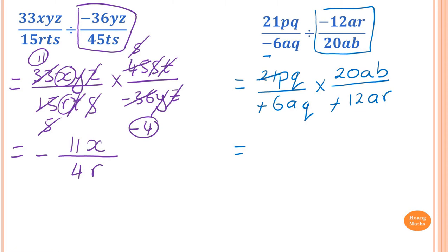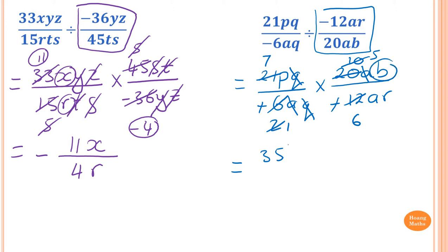Simplify numerals: 21 and 6 divide by 3 giving 7 and 2; then 2 and 20 divide by 2 giving 1 and 10; then 10 and 12 divide by 2 giving 5 and 6. Cancel pronumerals: q cancels with q, a cancels with a. Result: 7 times 5 is 35, with b and p on top, and 1 times 6 is 6, with ar on the bottom. The answer is 35bp over 6ar.